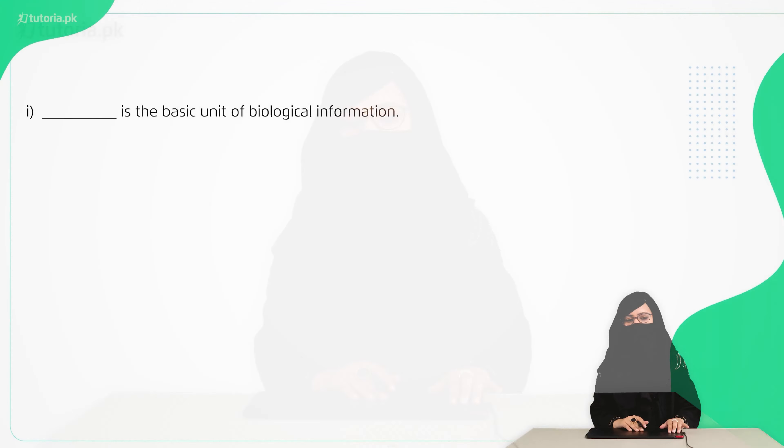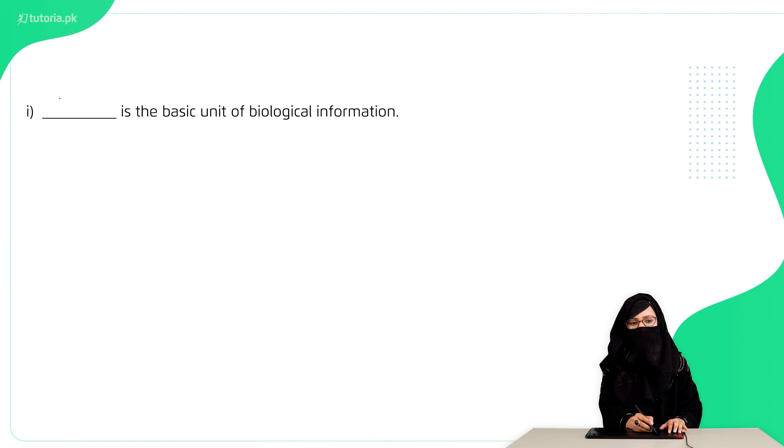Hello students, Assalamu Alaikum. This is Laibah, your biology instructor from tutoria.pk. Today we are doing the exercise of your chapter 22, that is Variation and Genetics. Let's start with the fill in the blanks. The first question is, the basic unit of genetic information. The right answer is gene.